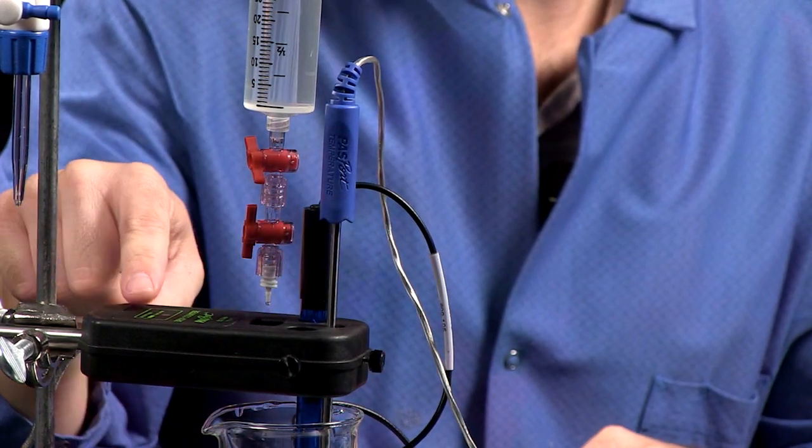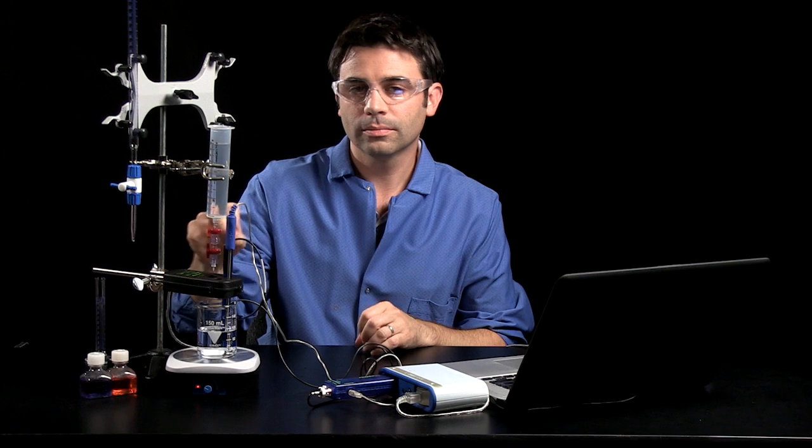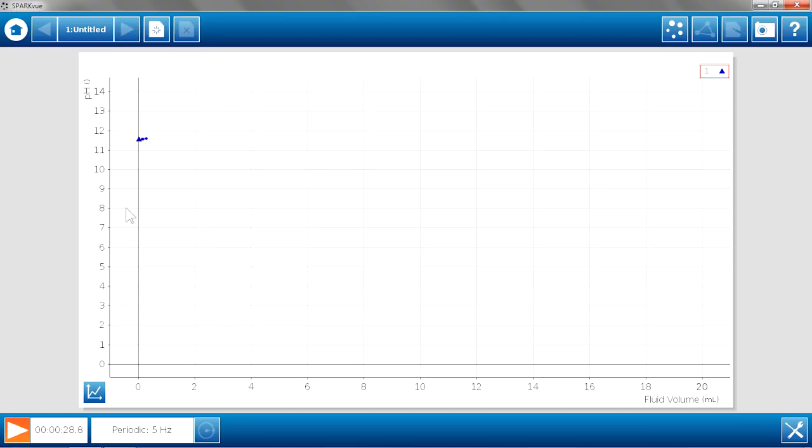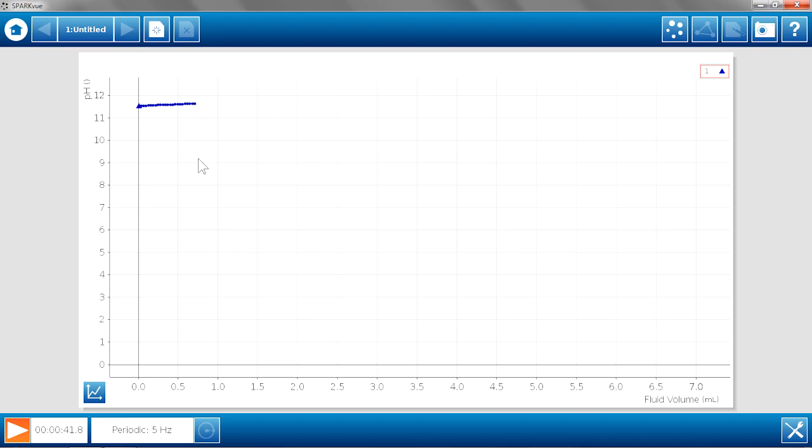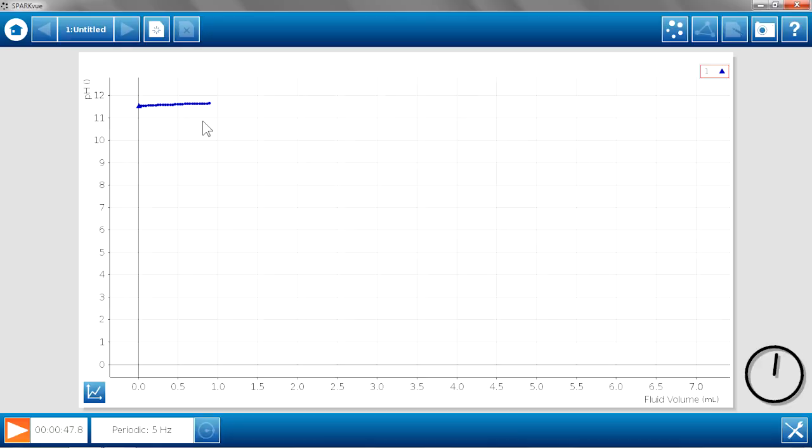And as a drop goes through, the LED light in here blinks so that you know that a drop is being collected. And I'm going to rescale my graph a little bit. Here's my initial pH, very high because I'm titrating sodium hydroxide with hydrochloric acid. And we'll let this go and see how the titration curve looks.